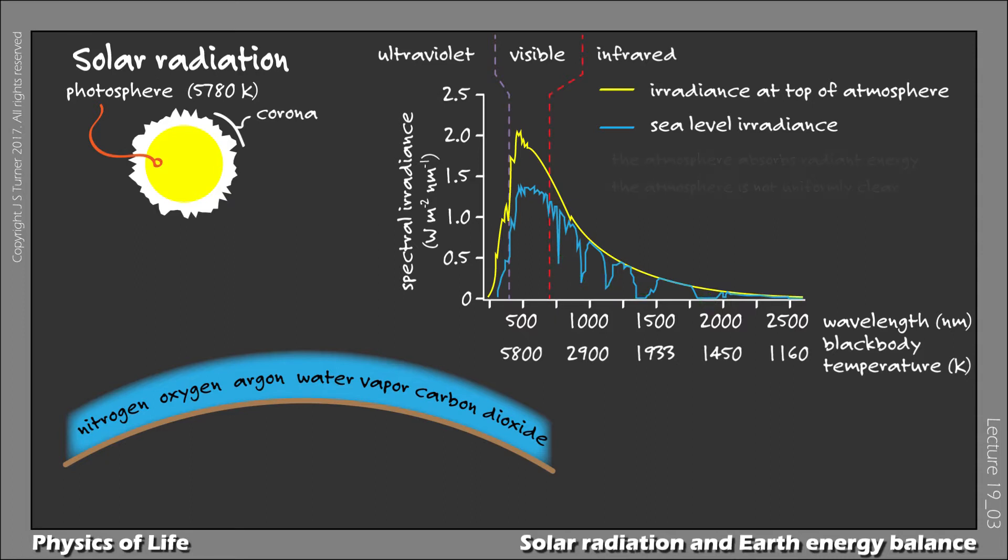These bands exist because certain gases in the atmosphere absorb energy at these particular wavelengths. So, for example, oxygen is relatively opaque at a wavelength of a little over 750 nm, which produces a drop in the sea level irradiance at that wavelength. Most of the bands of low sea level irradiance, however, are caused by water vapor in the atmosphere. Note that carbon dioxide is responsible only for a very small dip in surface irradiance at a wavelength of around 2,000 nm, well into the infrared.